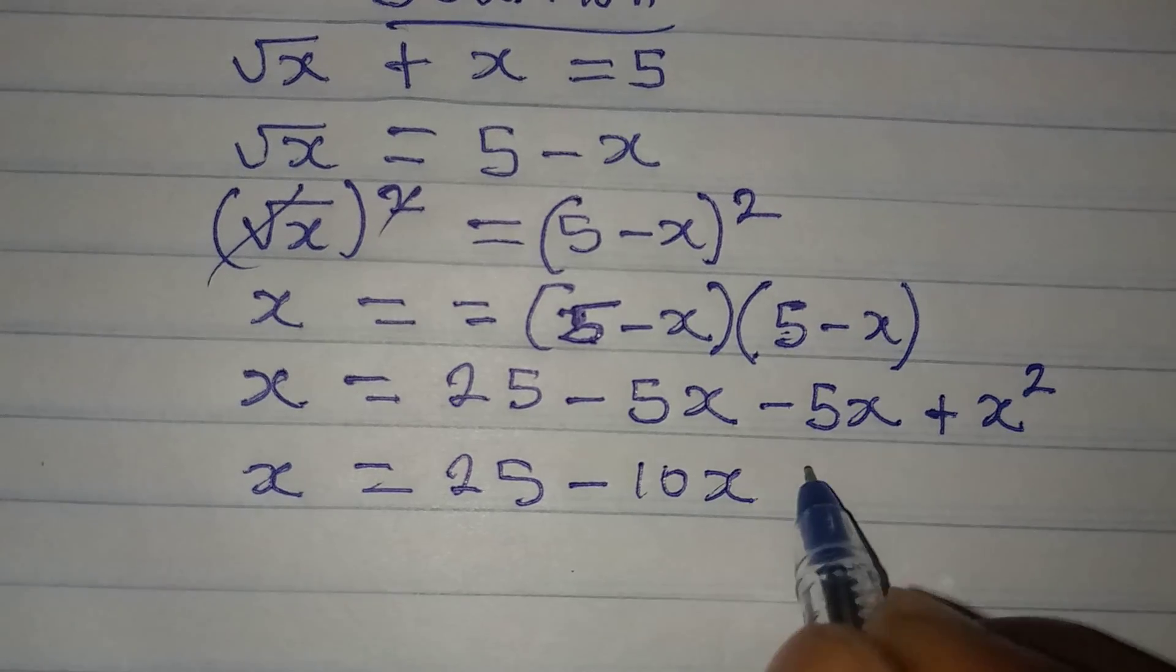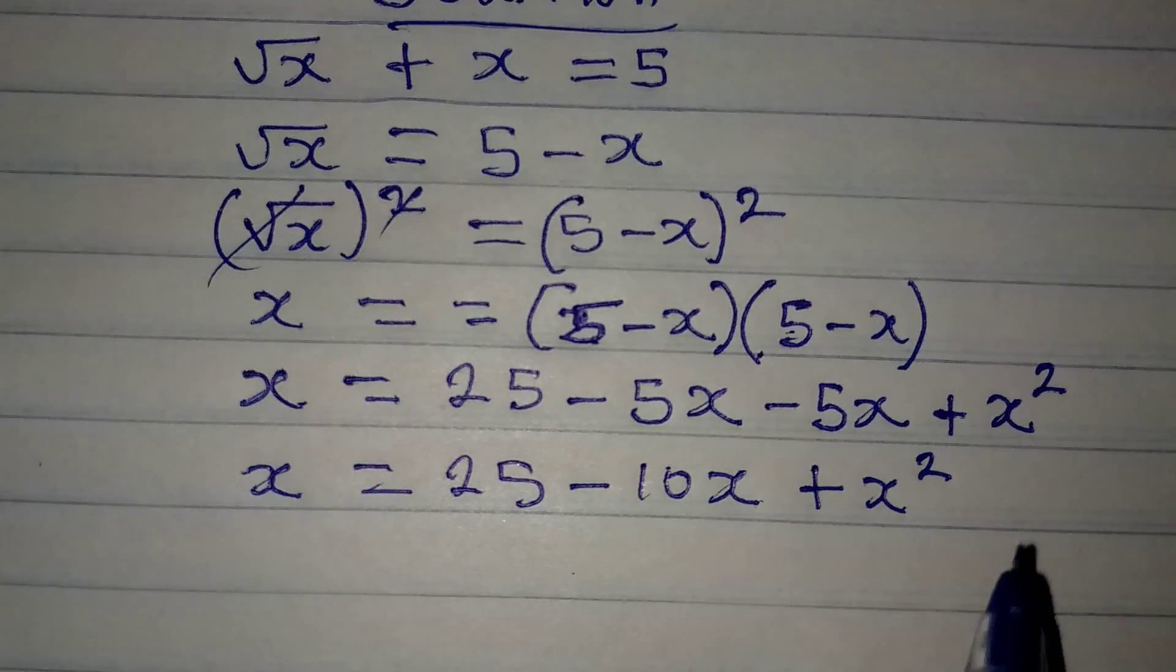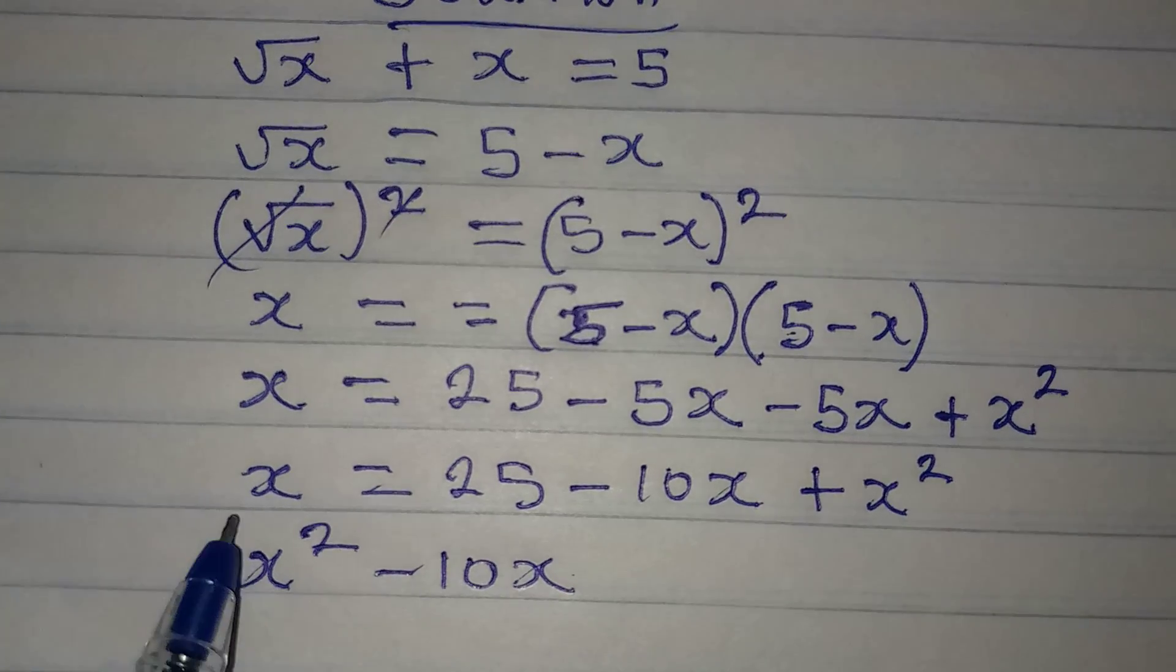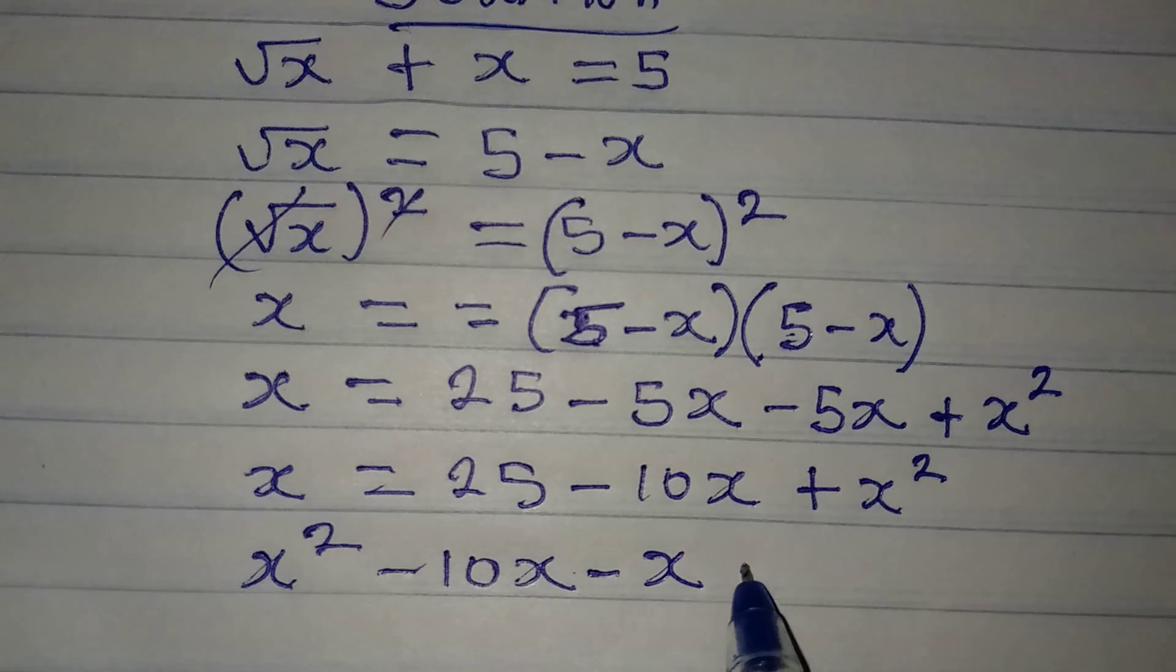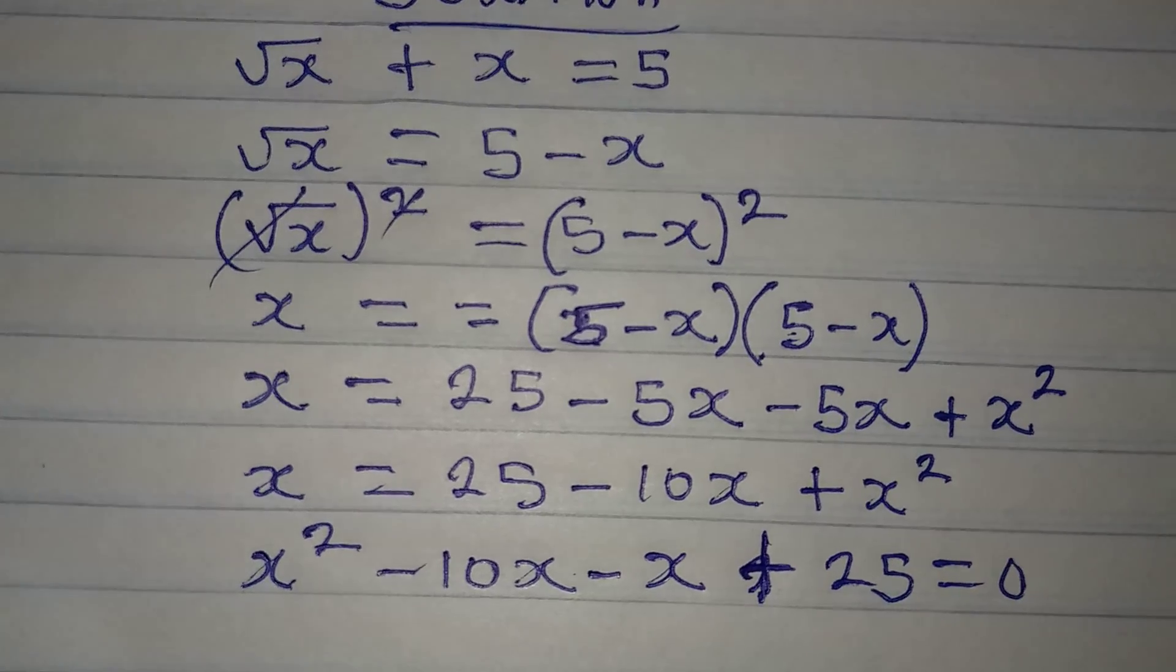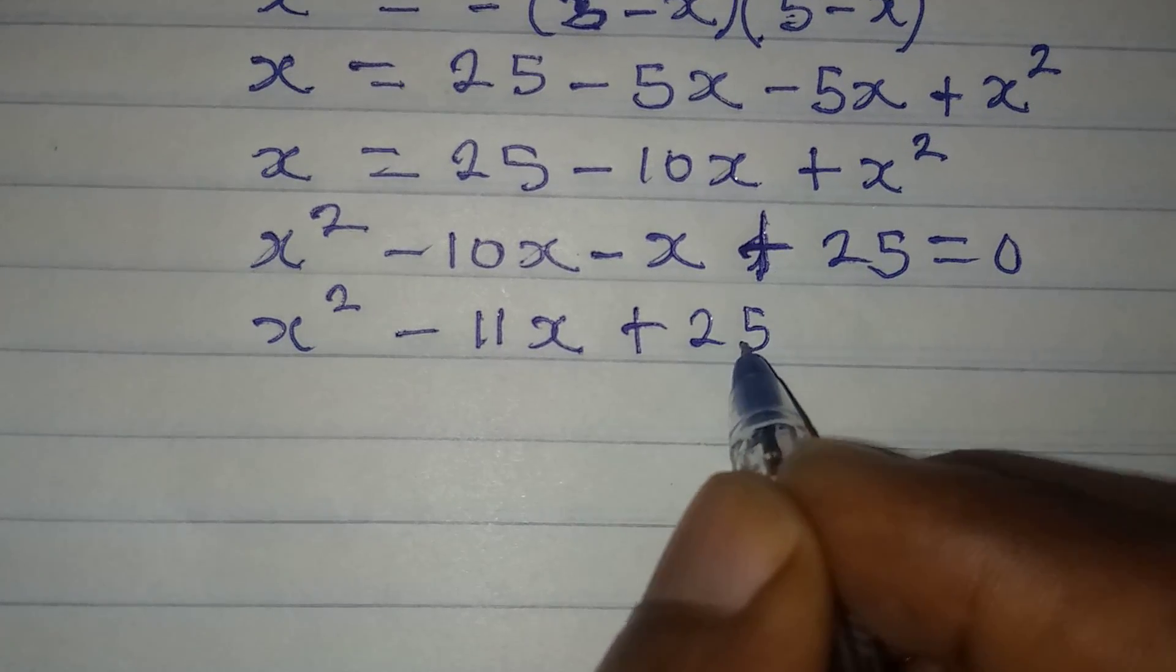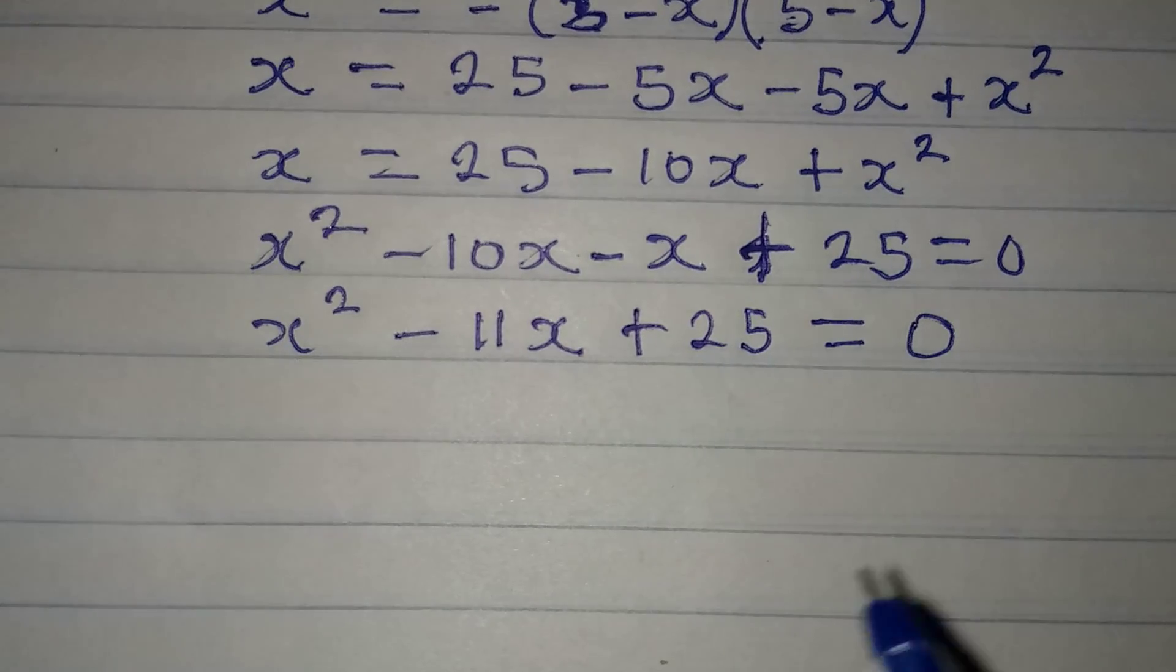Now we are having the quadratic equation. So let this come first. I'm going to write x squared, then minus 10x follows. Then this x here, since it's coming to the other side, it becomes minus x, and here we have plus 25. This is still equal to 0. So from here, x squared minus 11x plus 25 is equal to 0.